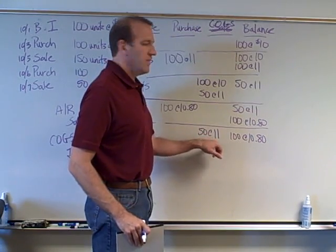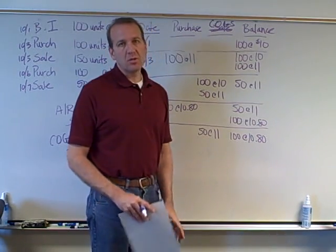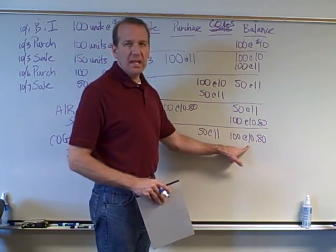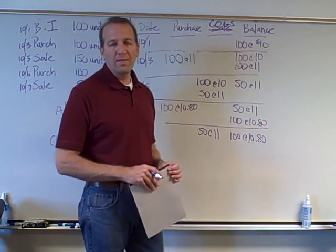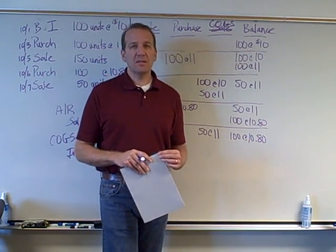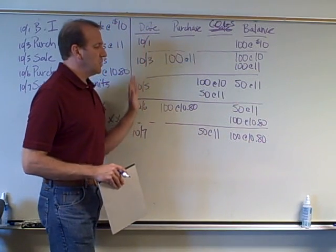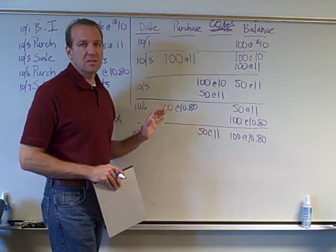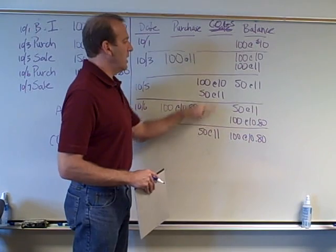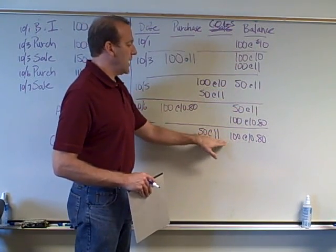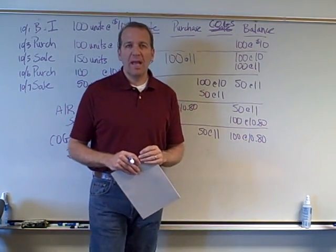Our cost of goods sold is 50 at $11. To figure out the total cost of goods sold, you would multiply these out and add that up. Our ending inventory is 100 units at $10.80, which equals $1,080 in inventory. So that's the FIFO method. Make sure you understand this — the chapter goes over in detail how to calculate this. Be very careful: we're looking at the perpetual inventory method, which means we perpetually update our inventory numbers after every transaction. We do not use the periodic method in this class. Good luck with FIFO, and we'll get to LIFO in just a little bit.